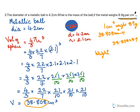So the weight of the ball will be 38.808, which is its volume, into 8.9. And the answer here is approximately 345.3912 grams.